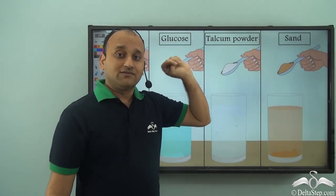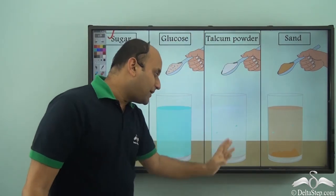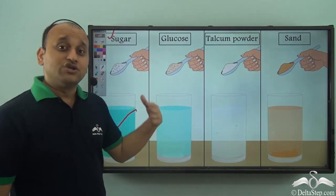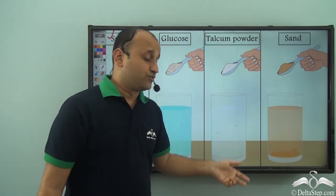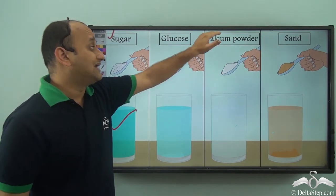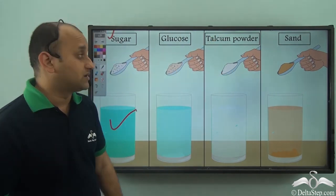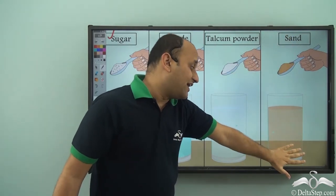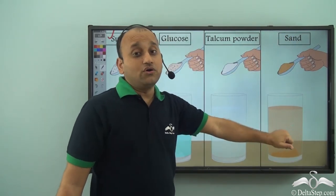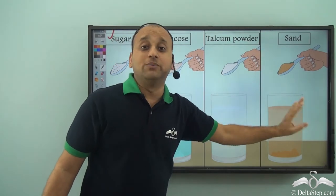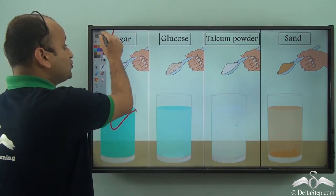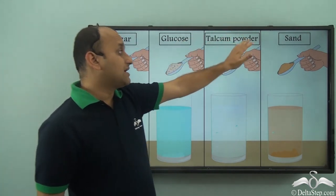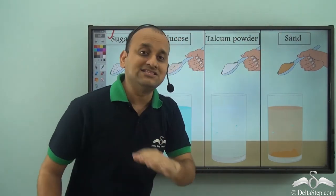What about talcum powder? If you add talcum powder, it will not mix in water and slowly you will see it settling down — so talcum powder is insoluble in water. What about sand? Even sand will finally settle down, so sand is also insoluble in water. So we have sugar and glucose which are soluble in water, and talcum powder and sand which are insoluble in water.